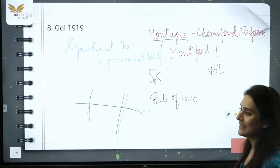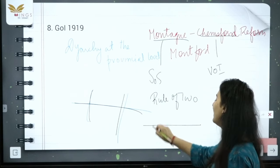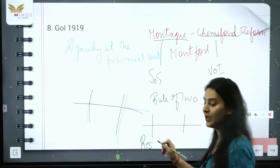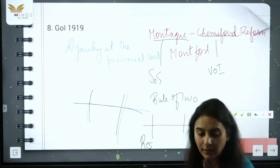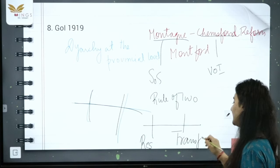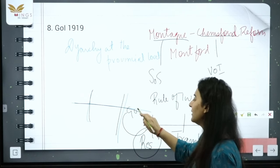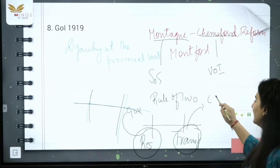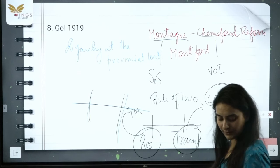Under Dyarchy, subjects in the provinces were divided into two: Reserved subjects, which came directly under the Governor, and Transferred subjects, which were administered by the Council of Ministers.